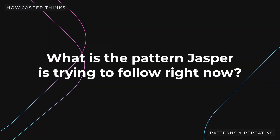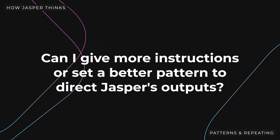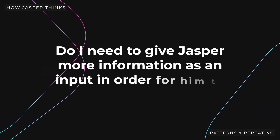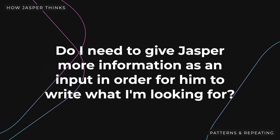If Jasper isn't writing the content that you want, ask yourself these questions: What is the pattern Jasper is trying to follow right now? Can I give more instructions or set a better pattern to direct his outputs? Do I need to give Jasper more information as input in order for him to write what I'm looking for? You now know how Jasper thinks, acts, and even what he looks for as he is writing content for you. As you set out to use Jasper as a writing assistant, keep all of this in mind so that you can consistently get great results.